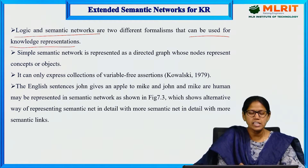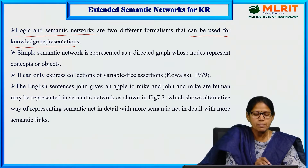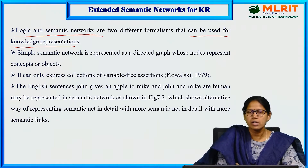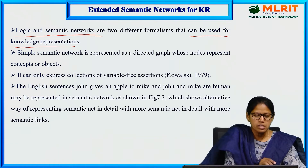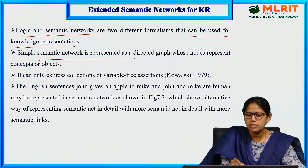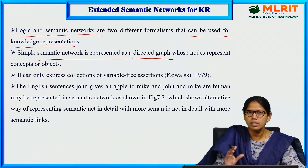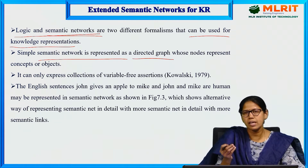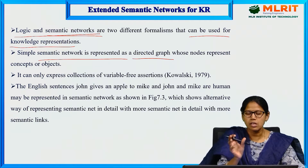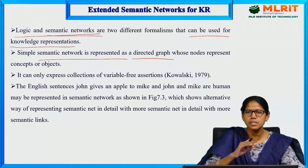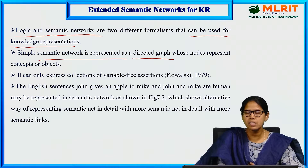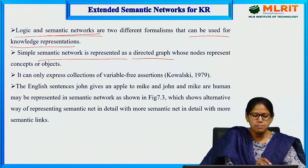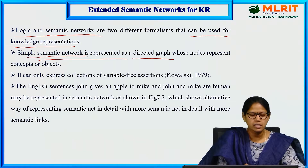We have seen propositional logic and predicate logic and semantic networks — how we can draw the network for a particular concept or knowledge. In a simple semantic network, it will be represented using a directed graph. We take the concept or object and use directed graphs towards the concept or object. For example, hospital and child hospital: hospital is the super concept and child hospital is the sub one.